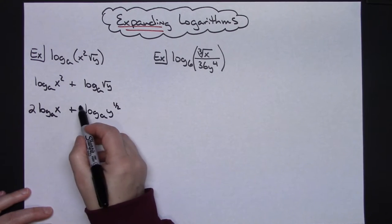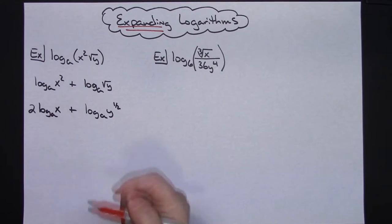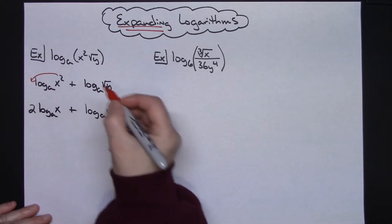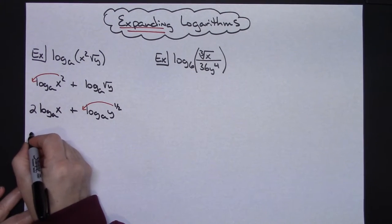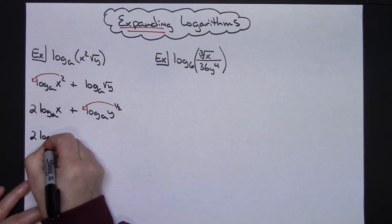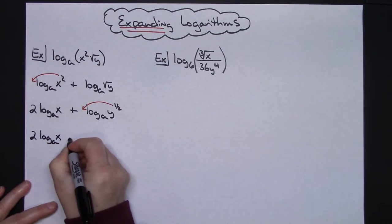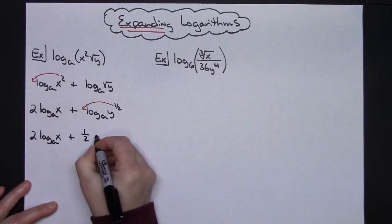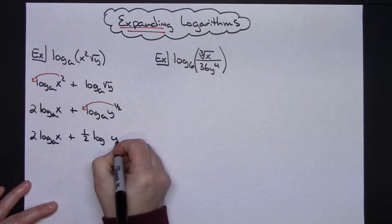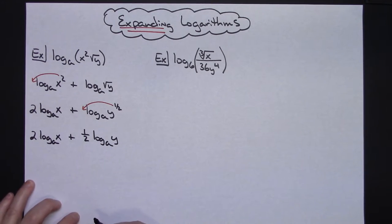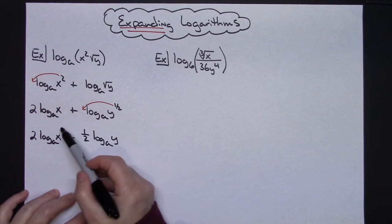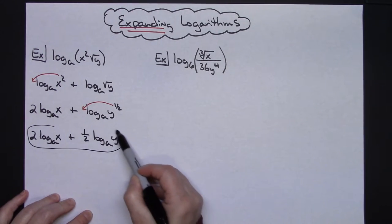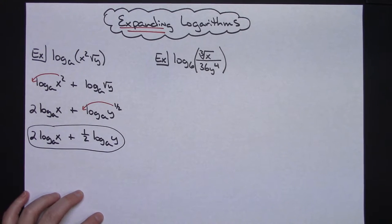So I'm going to jump the frog. First I'll rewrite as the log base a of y raised to the one-half, and then I can bring that exponent down. So my final expanded form is two times log base a of x, plus one-half times log base a of y. I have expanded and simplified it as much as possible using the properties of logarithms, so at that point I can stop.